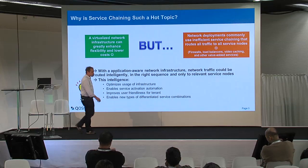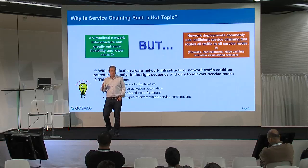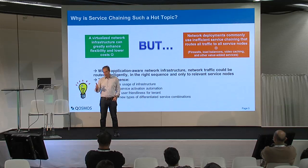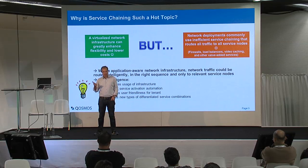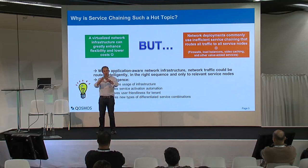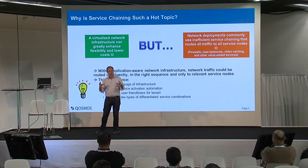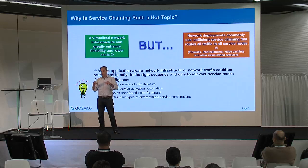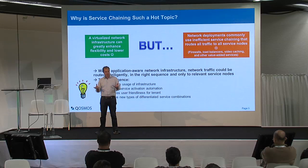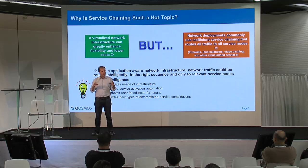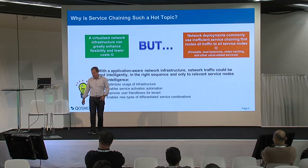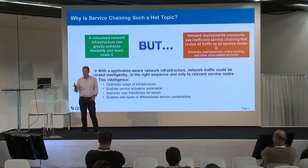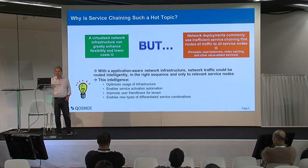Service chaining is useful when you want to dynamically deploy boxes and enforce some policies and do some processing on some flows, but certainly not on all flows. At the end of the day, if you build a network with application-awareness service chaining, you will get better optimization of your resources because only the right flows will go to the right middle boxes, and it will make it easier to automate the deployment of services inside the network.